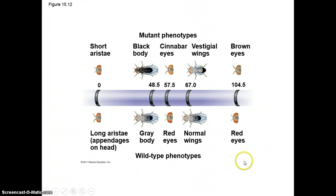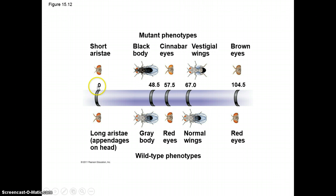Here is an example. You can have an allele shown on the top and the bottom, giving you the characteristics of each allele. The numbers here represent their position on the chromosome — 0 would be the first position, and 104 would be the last position. These numbers indicate relatively where these alleles are located compared to the very first allele.